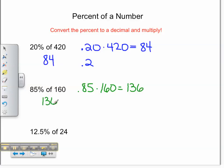Finally, we'll do 12.5% of 24. To write 12.5%, we write this as 125 thousandths. Times 24 is equal to 3. Therefore, 3 is 12.5% of 24.